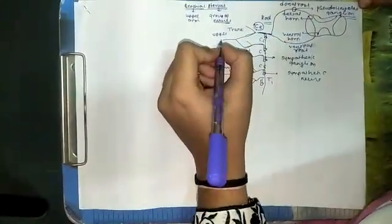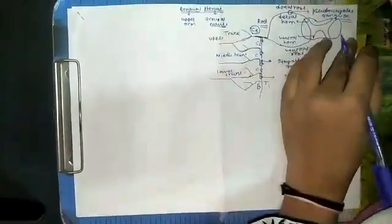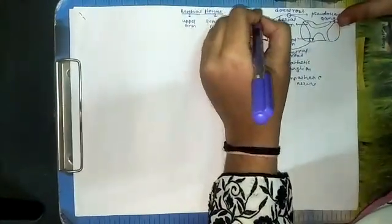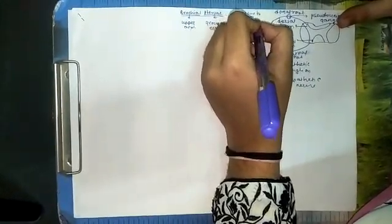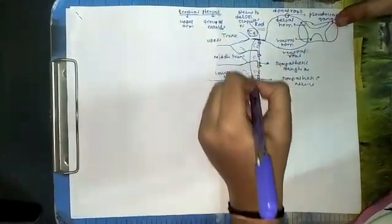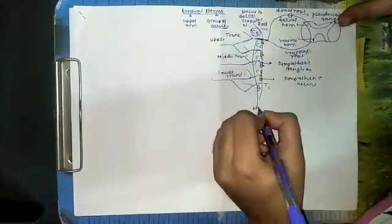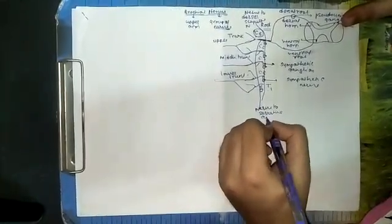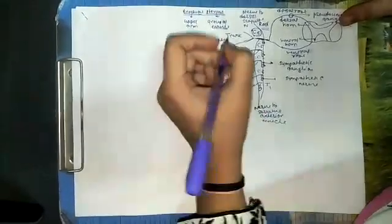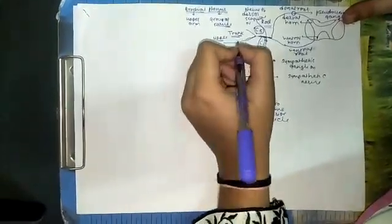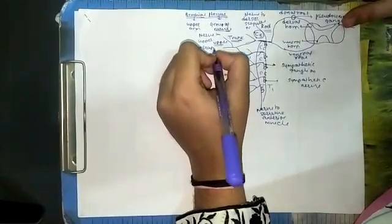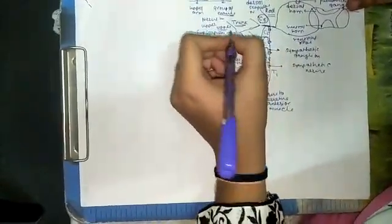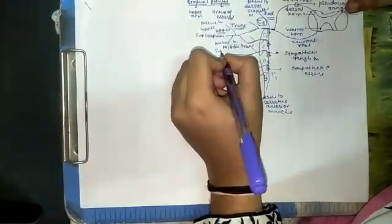The upper trunk gives rise to different structures. But before that, we will see what nerves arise from the root and the trunk. The root gives rise to two nerves: one is the nerve to rhomboideus, also known as the dorsal scapular nerve. The other nerve, arising from C5, C6, and C7, is the nerve to serratus anterior muscle. At the trunk level, two nerves arise: one is the nerve to upper subscapularis, and the other is the nerve to subclavius muscle.